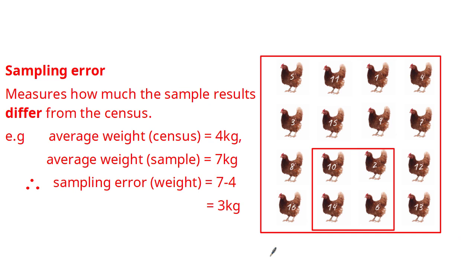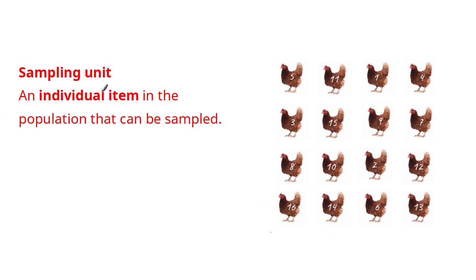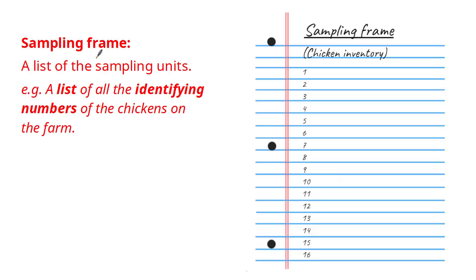Let's have a look at a couple more definitions that you need to be aware of for the exams. A sampling unit is known as an individual item in the population that can be sampled. Whenever you hear the word unit, you should be thinking of one. An example of a sampling unit in this case is chicken number 15 as shown on the diagram. The next definition is called a sampling frame, which is simply a list of sampling units. A sampling frame in this case would be a list of all the identifying numbers of the chickens on the farm as illustrated on this diagram, 1 through 16.